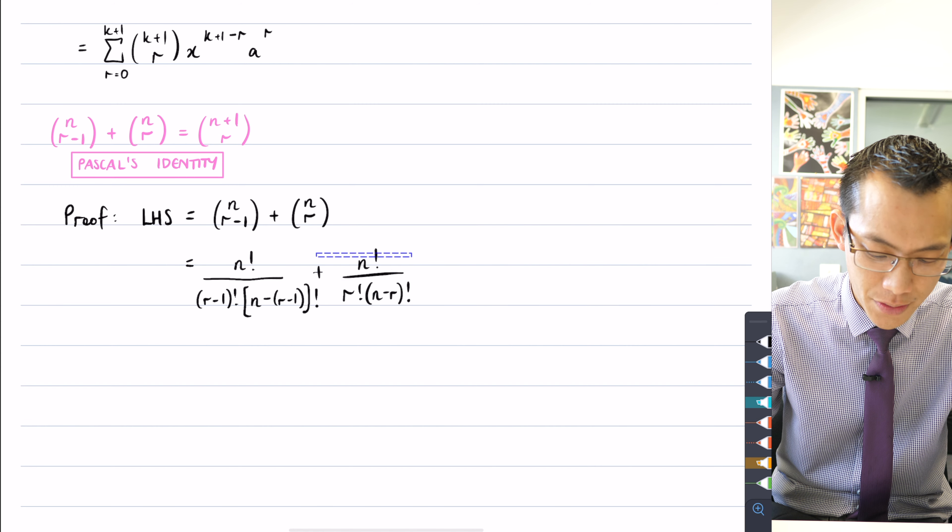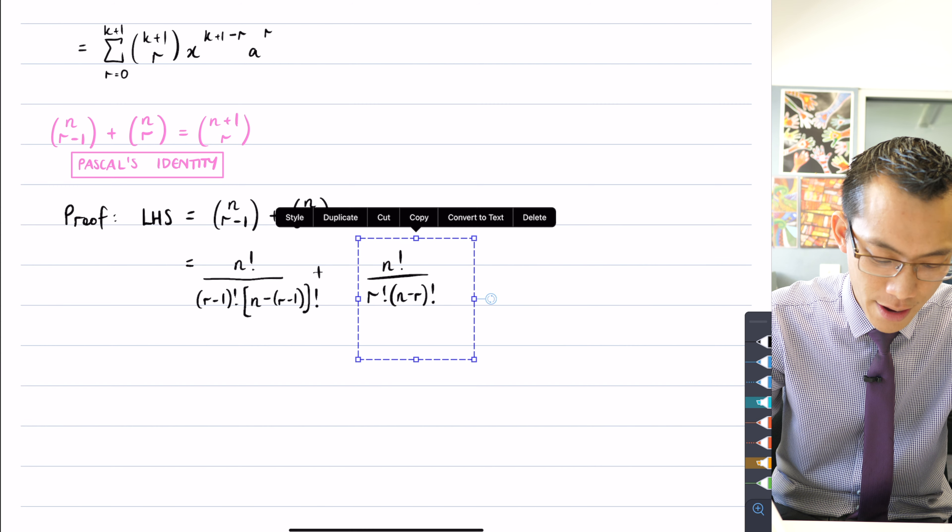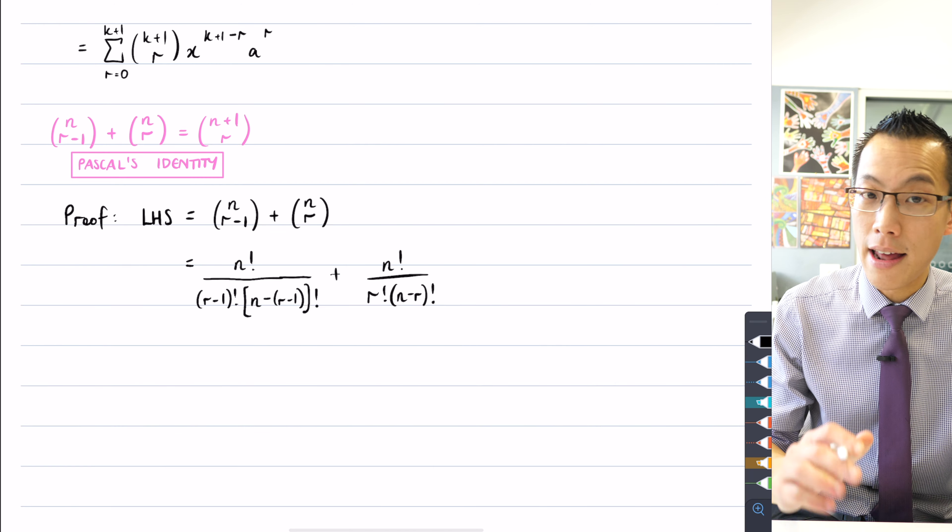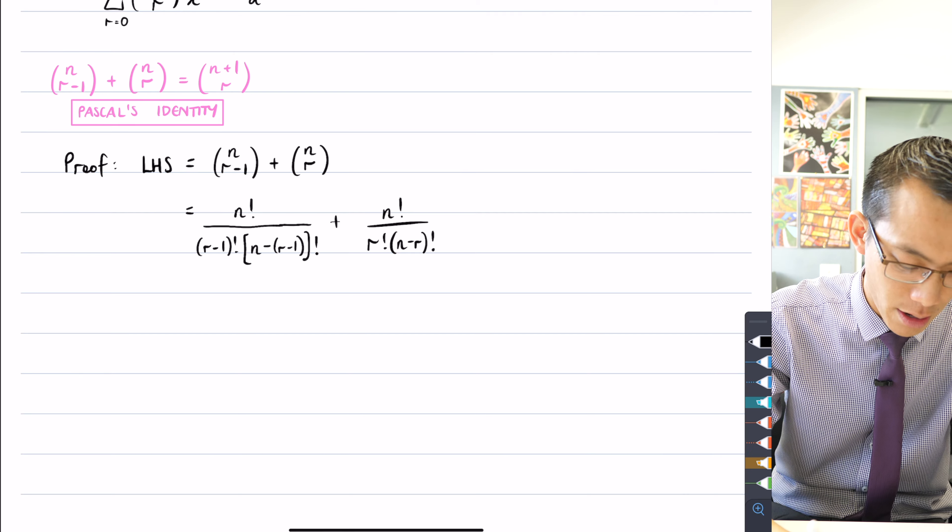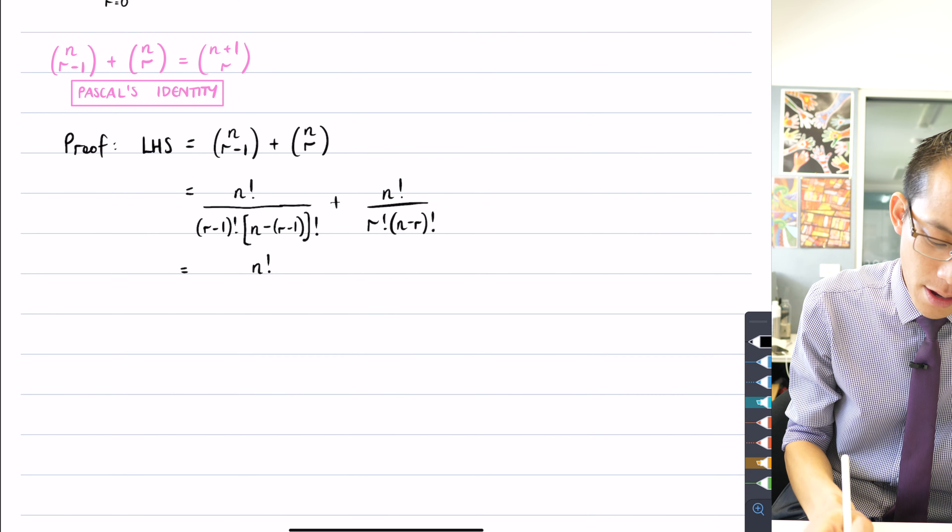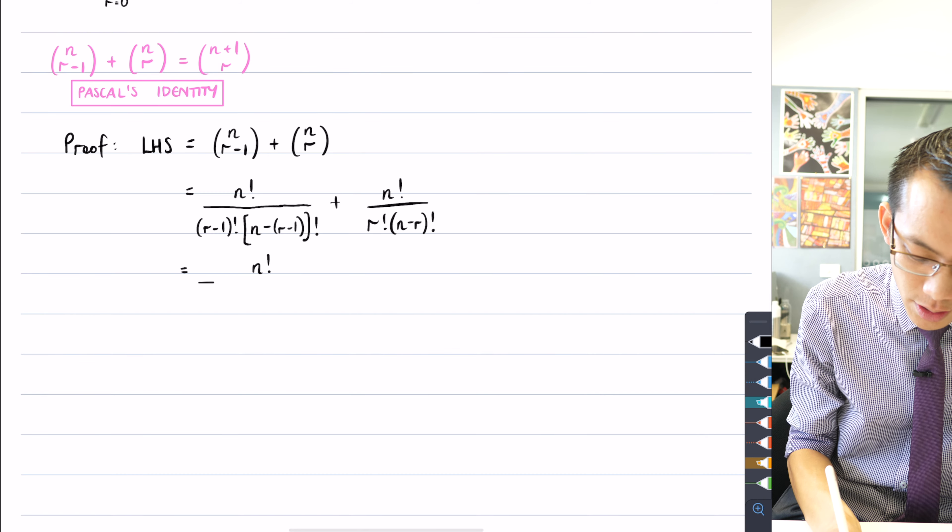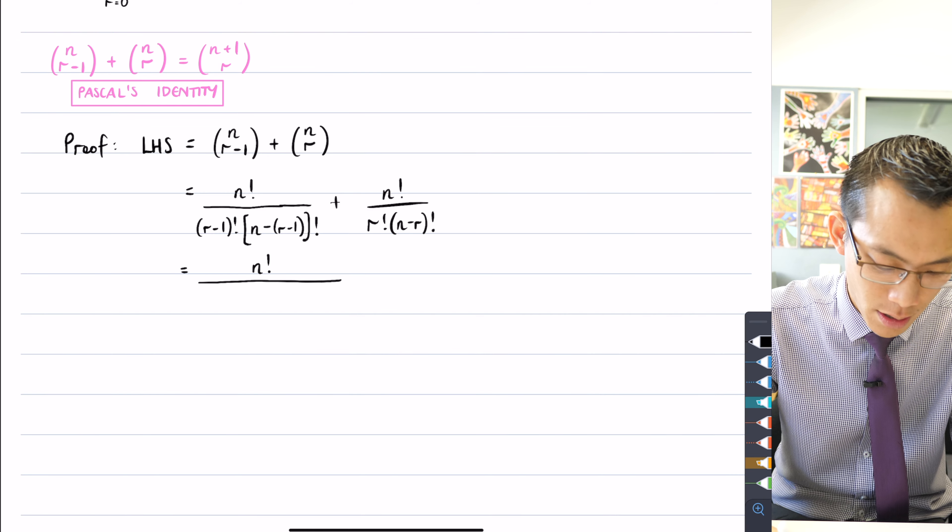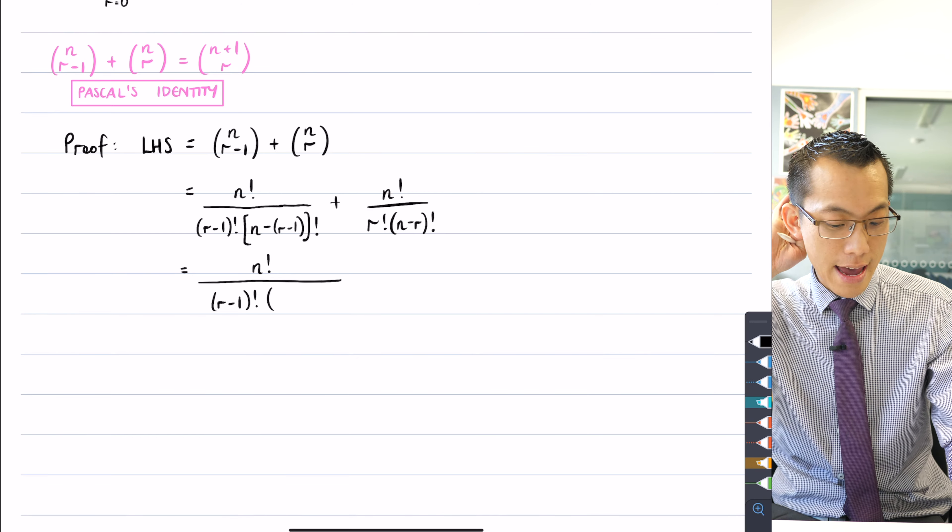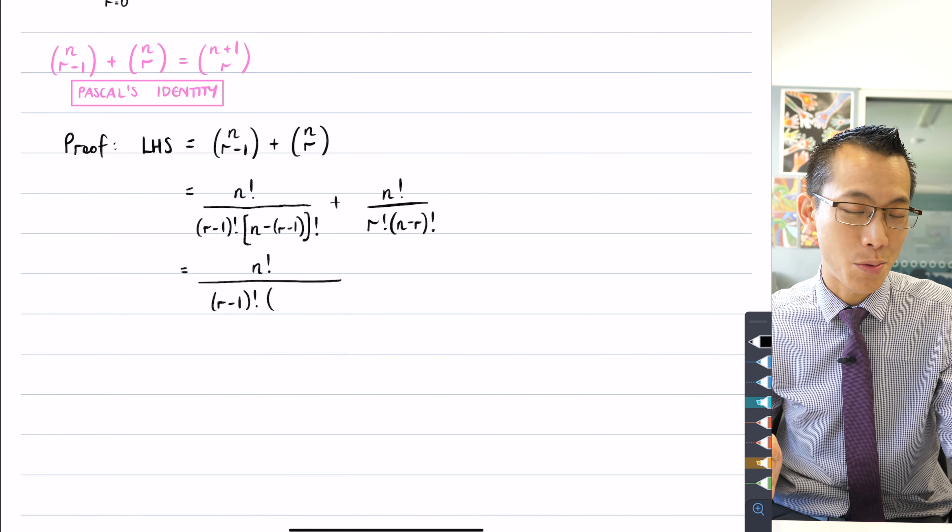So you can see there's going to be some double negative business over here. I still haven't given myself enough space. So I'm going to want to expand that fairly carefully. So let's do that on the next line. Get that n factorial over there. And then I'm actually going to leave myself even more space over here.